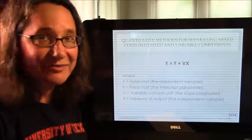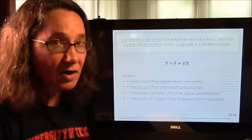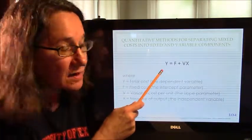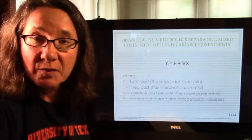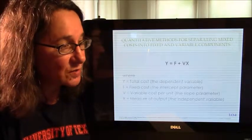So, we're going to remind ourselves of the equation for a line. In our cost accounting world, Y is total cost. So Y is total cost, which is what we want to know. It's our dependent variable.